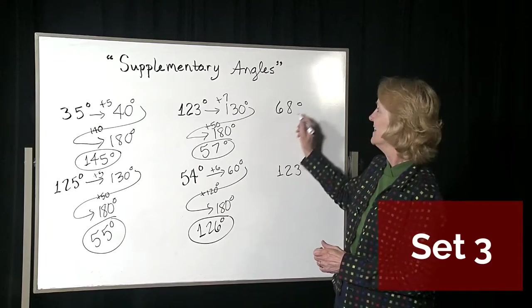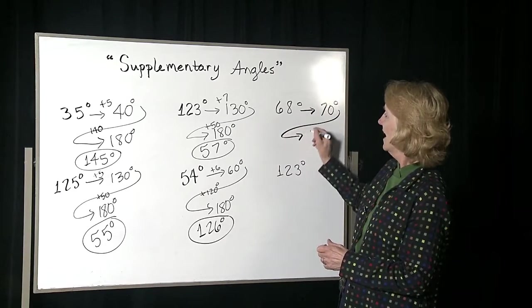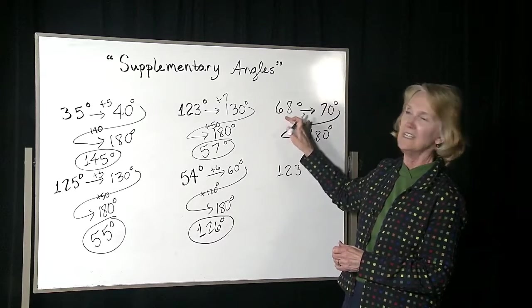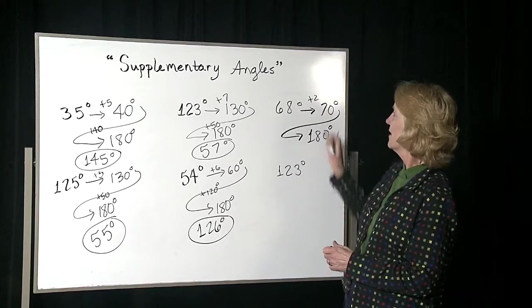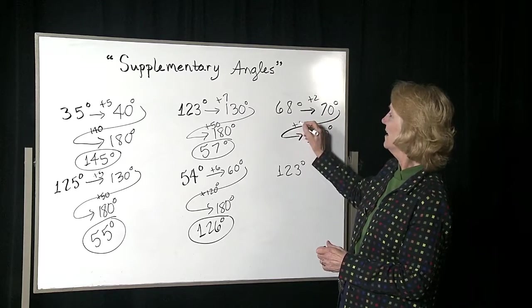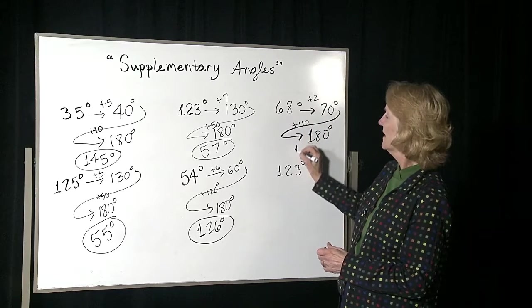Next one, if you're at 68, you want to get to the next multiple of 10, and then the 180. If you're at 68, how do you get to 70? Add 2. If you're at 70, how do you get to 180? You need to add 110. So 110 plus 2 is 112.